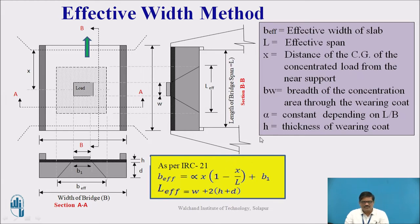In this equation, alpha is nothing but a constant which depends on L by B ratio. L means the length of the slab and B is the width of the slab. Based on that ratio, we can find out that constant alpha.